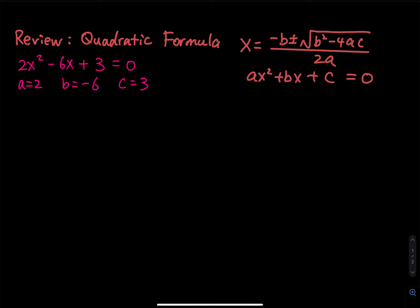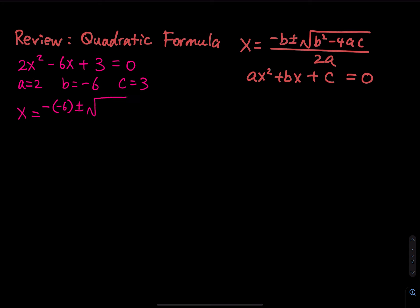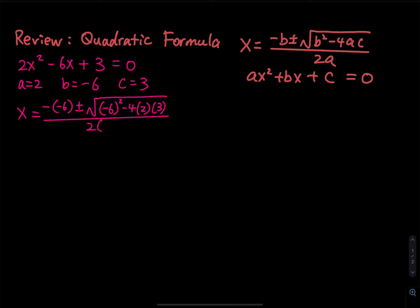The next step is simple — you just plug in. Before you do that, make sure you have all the terms on one side and zero on the other side. So you have x equals negative b, which is negative negative 6, plus or minus the square root of b squared — that's negative 6 squared — minus 4 times a times c, so 4 times 2 times c, divided by 2a, which is 2 times 2.